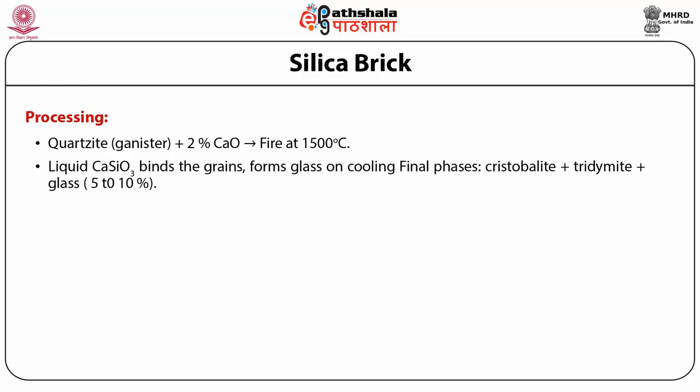After cooling, the brick consists of 5 to 10% glass and the rest is cristobalite and tridymite. The silica brick has exceptionally high thermal shock resistance above 800°C. Below this temperature, due to a high thermal coefficient of expansion, it has poor thermal shock resistance and heating and cooling between room temperature and 800°C must be done very slowly.